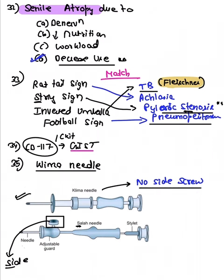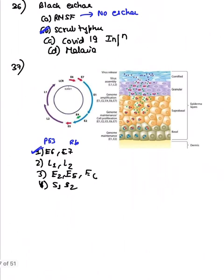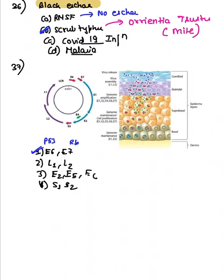A question on black eschar was asked. Options included COVID-19, malaria, Rocky Mountain spotted fever, and scrub typhus. Black eschar is seen in scrub typhus, caused by Orientia tsutsugamushi and transmitted by a mite.